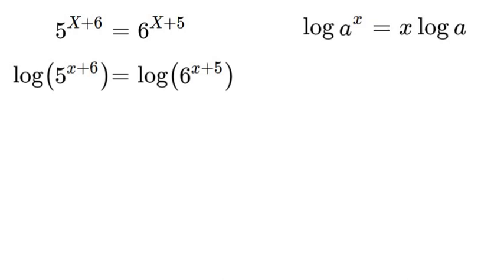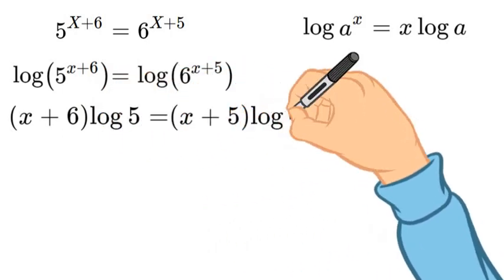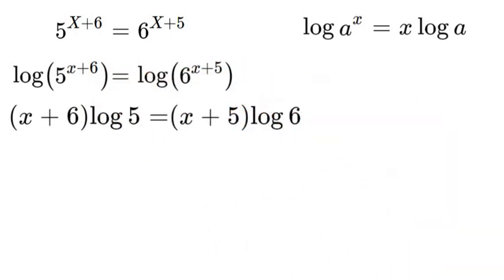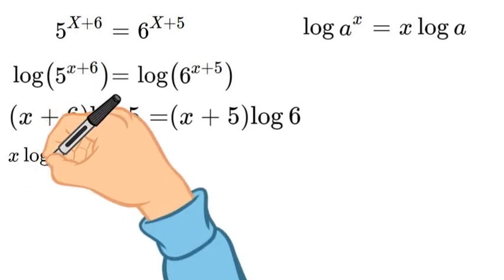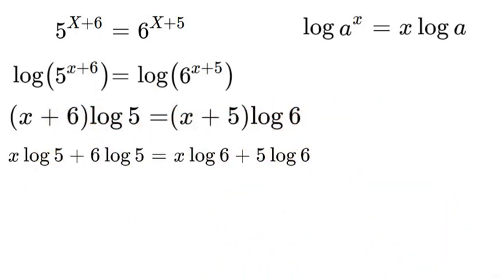That being said, we can rewrite our equation. We can have x plus 6 times log 5 equals x plus 5 times log 6. Once we have done that, we can multiply that out. So we'll have x log 5 plus 6 log 5 equals x log 6 plus 5 log 6.